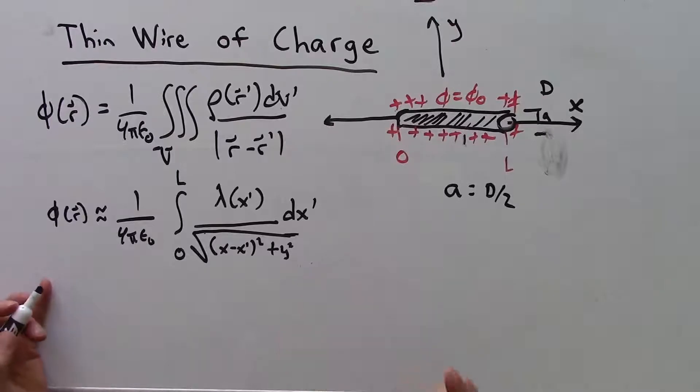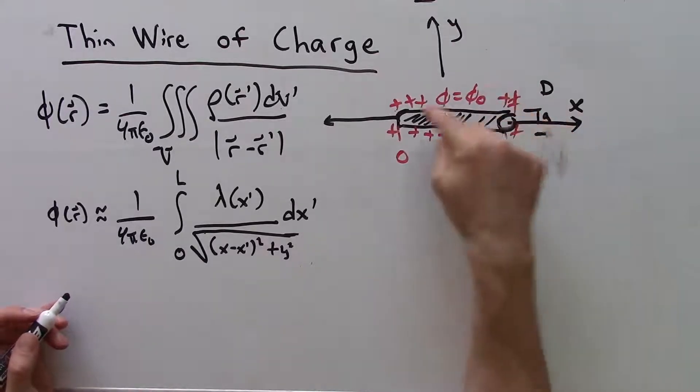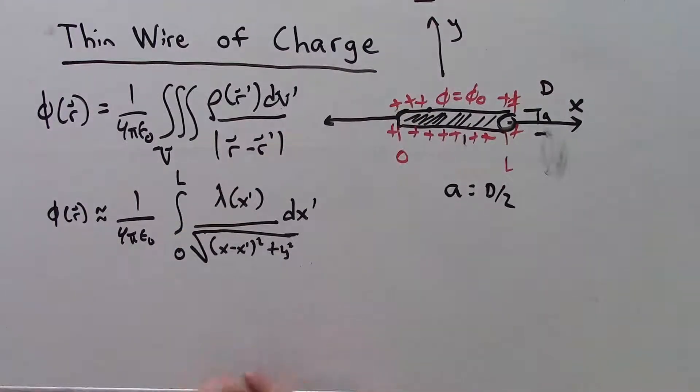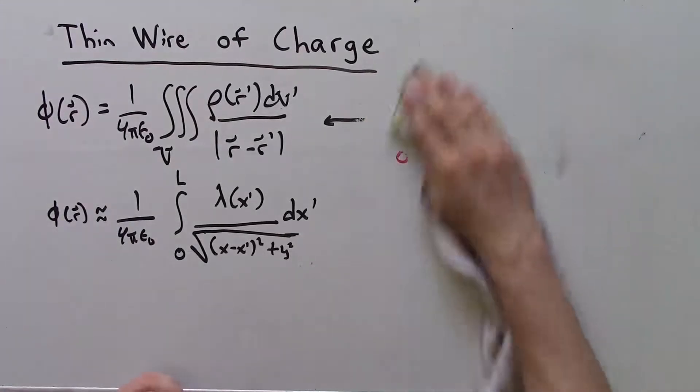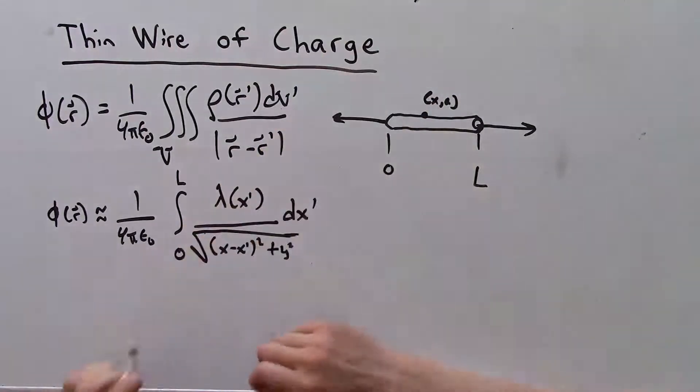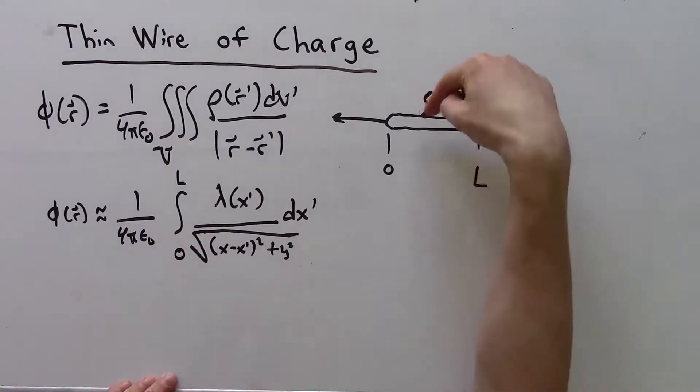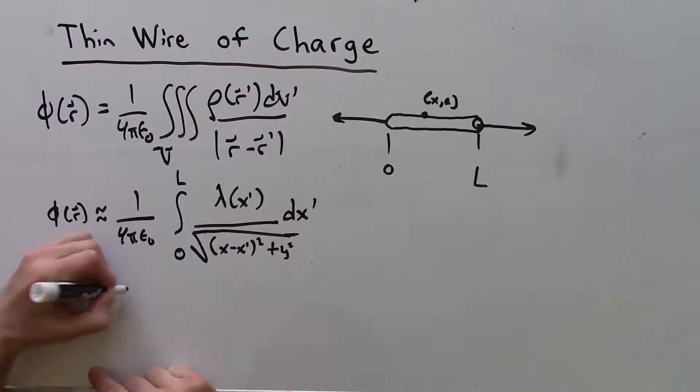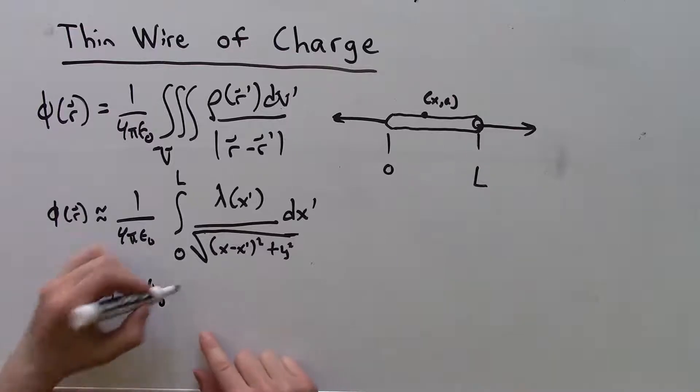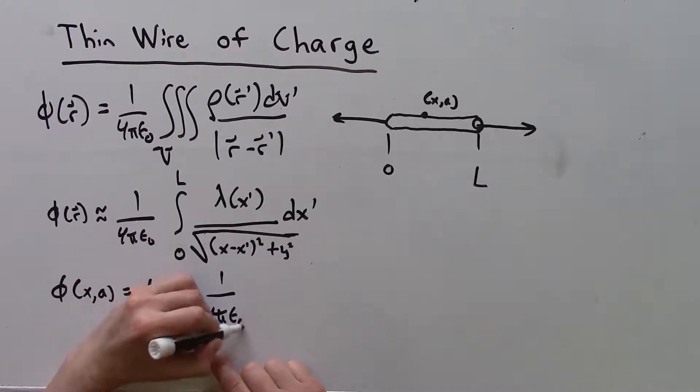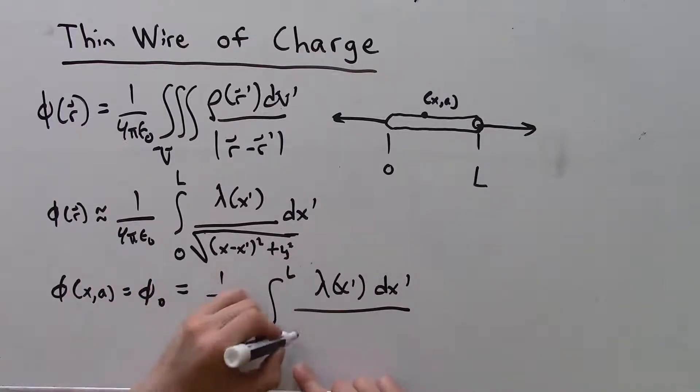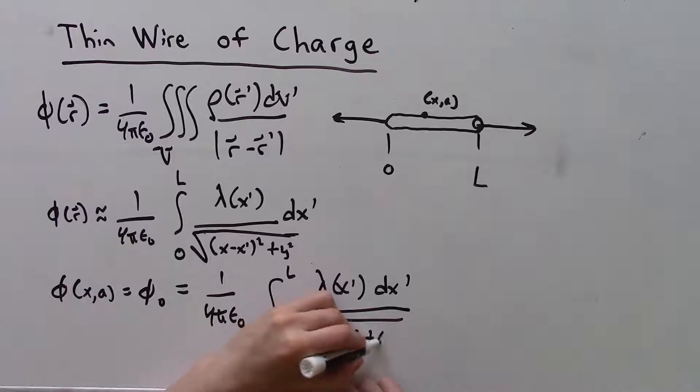We can make one extra assumption. We know what the scalar potential is along the surface of this object. I could pick an observation point here at the point x comma a. So φ(x, a) equals φ₀, which might be one volt or something. It's going to look like 1 over 4π ε₀ times the integral from 0 to L of λ(x') dx' over the square root of (x - x')² + a². This is now the equation we care about.